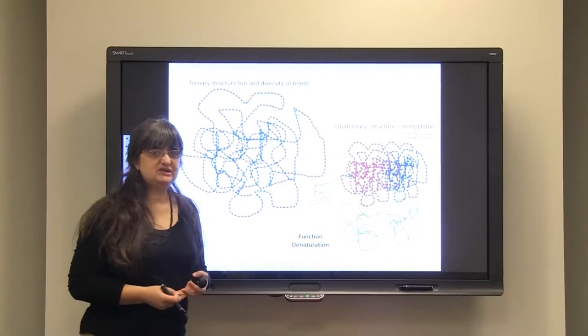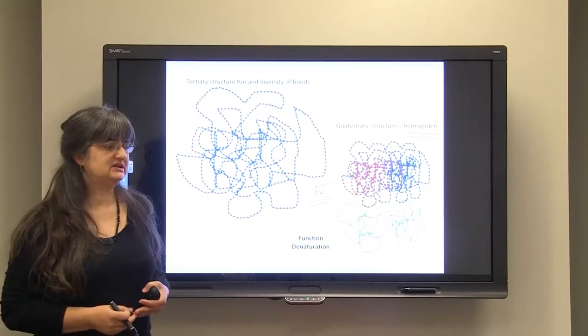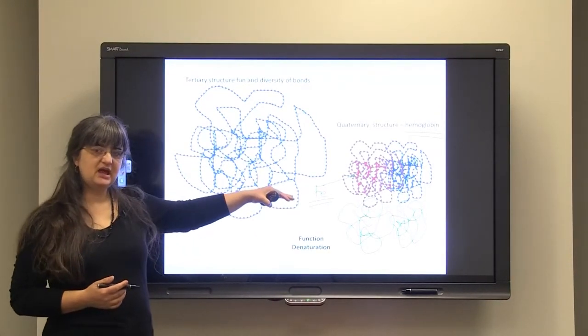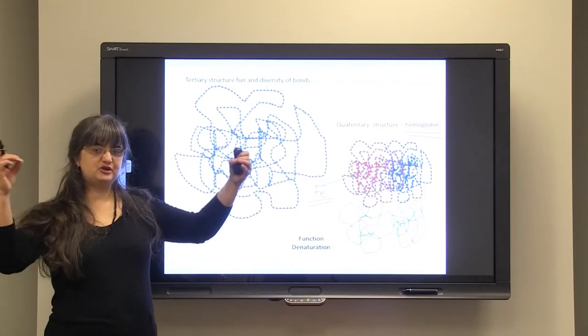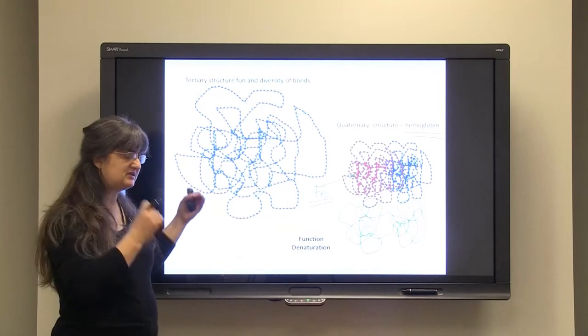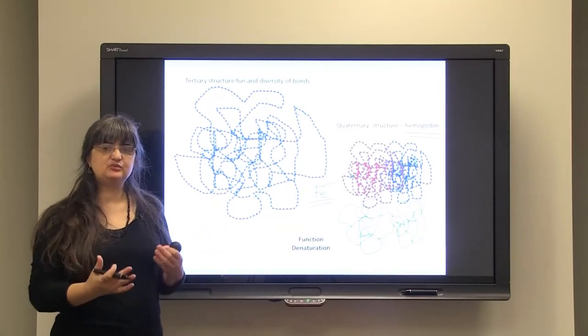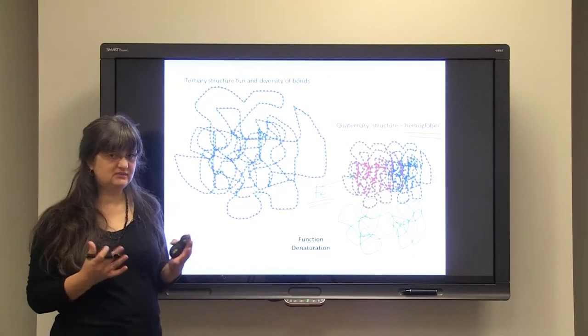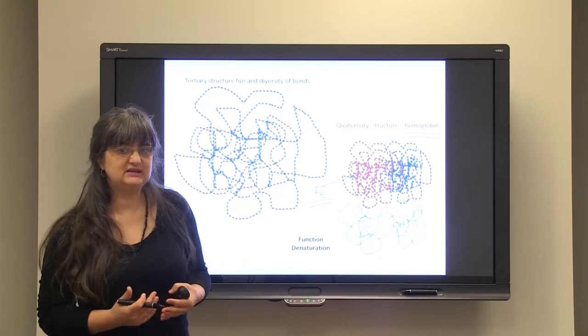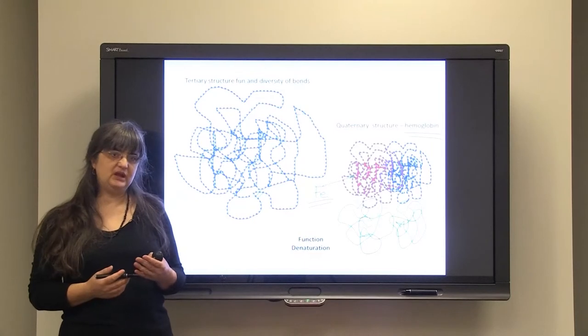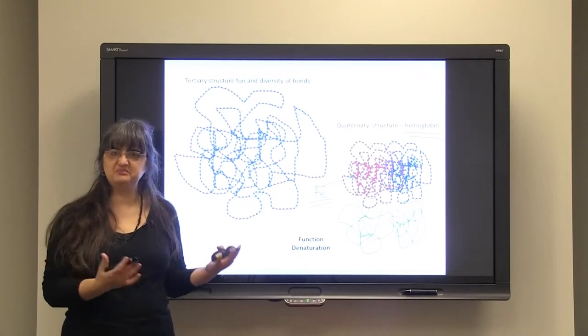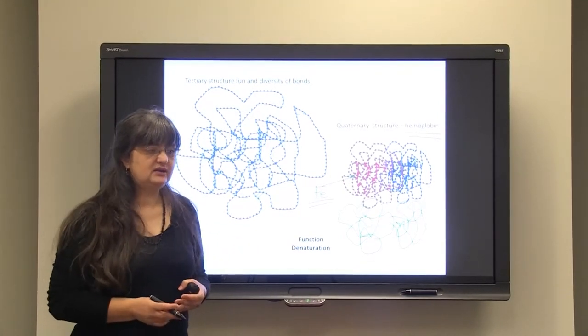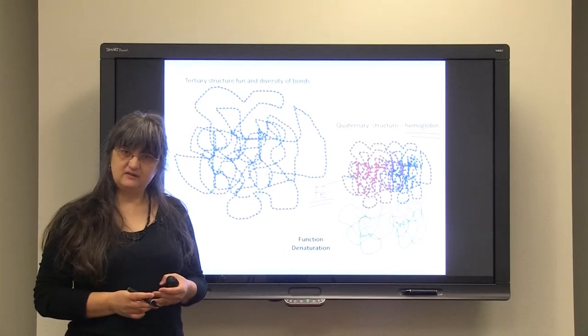Now regarding denaturation, you may have heard about that. Denaturation means breaking down all of these bonds that we mentioned and getting it back to that primary structure. Bringing back to primary structure, that is denaturation. What happens when a boiled egg - can that egg white be runny and jiggly again? No, because it was denaturated. And that is what is happening usually when we boil something to kill bacteria and so forth. What we actually do is denaturate.